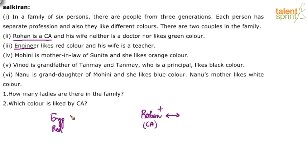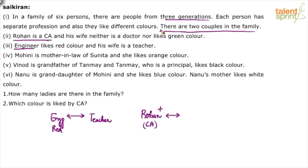The other couple is: engineer who likes red color, and his wife is a teacher — so the engineer is married to the teacher. The point that now arises is which of these two couples belongs to the higher generation, since there are three generations in this family and two married couples — one couple must belong to a higher generation than the other.